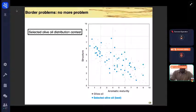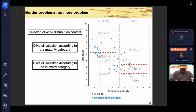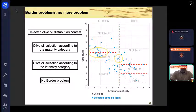If we represent the best oils selected by this method by comparing the different categories—maturity and intensity used in the competitions—we show that the problem with the limits no longer exists. We select olive oils that would not have been selected because of not enough intensity for this category or too much maturity for another category. They now have a chance to make a fair judgment and win a prize.